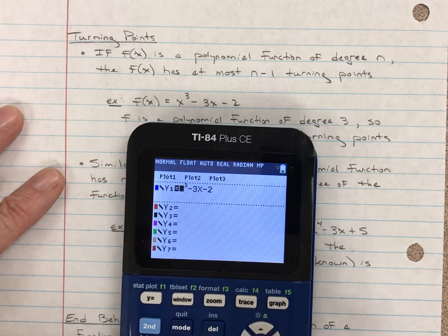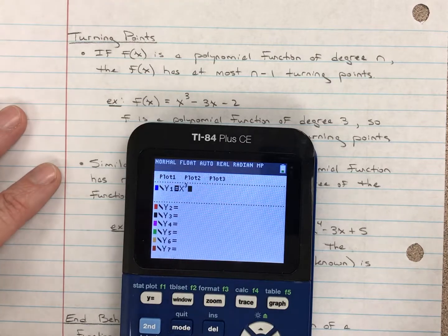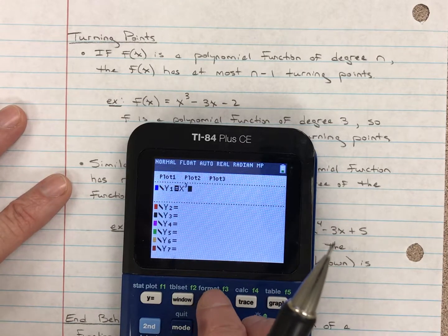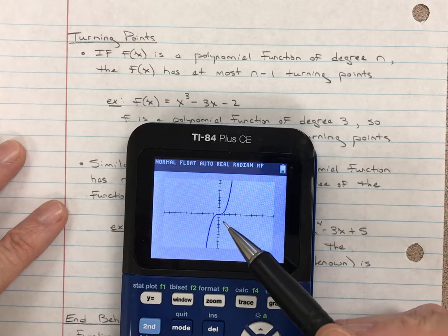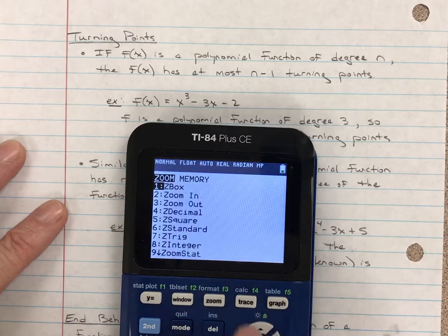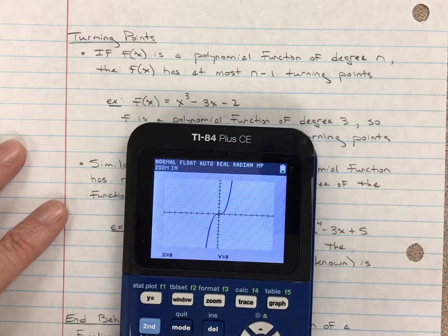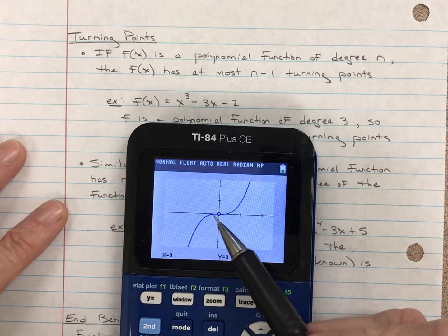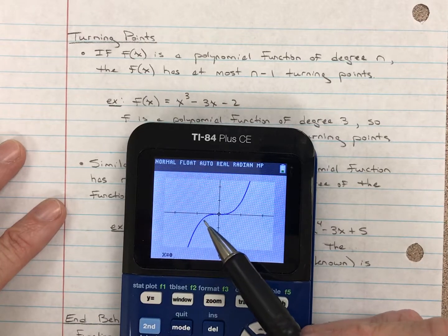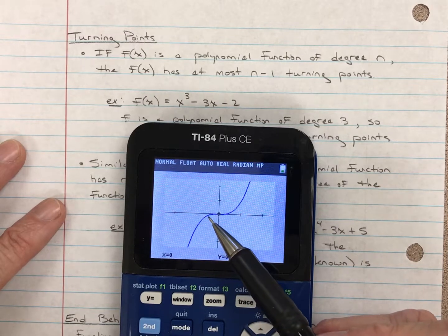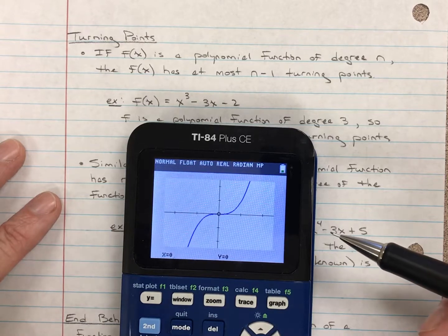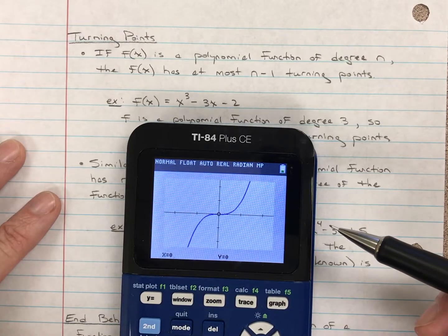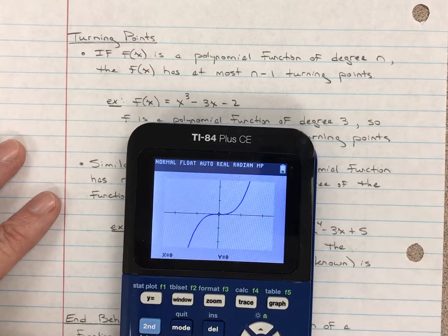Now let's look at the power function x³. Again, it's degree three, which means it has at most two turning points. But as you'll notice when I graph it — and zooming in on the origin — there's no place where it goes from increasing to decreasing. It flattens out but doesn't turn: it increases, increases less and less, becomes momentarily constant right at zero, then increases again. So x³ has no turning points, which is certainly at most two.